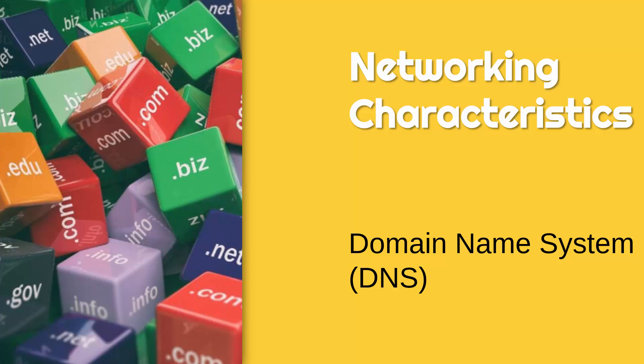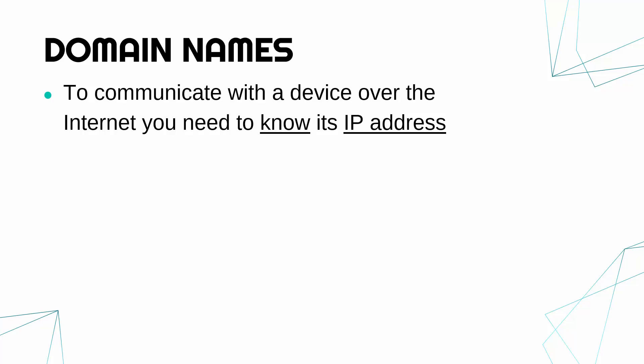I'm now going to talk about the domain name system, often shortened to just DNS. Before we talk about domain names, let's recap a really important fact. To communicate with a device over the internet you need to know its IP address. The IP address looks something like this — this one is a version 4 address, four decimal numbers separated by dots. There is a longer version with colons and hexadecimal instead, but it's a number we use to contact a device. We need it because the IP address tells us roughly where in the world the device is, and without it we wouldn't know how to communicate with it.